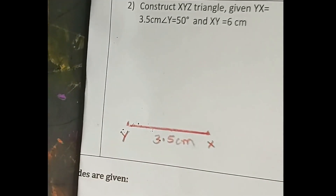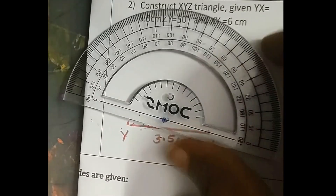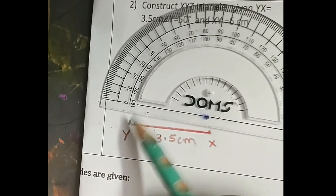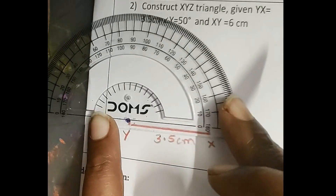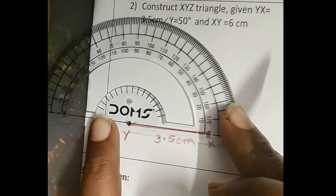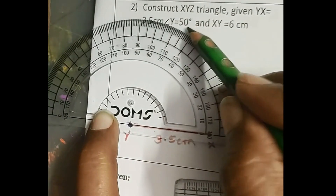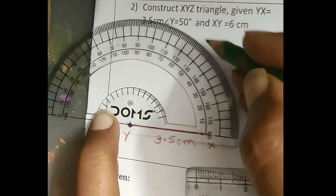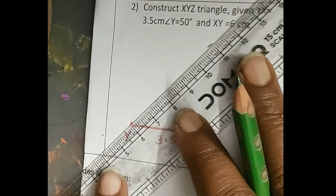Now we have to make an angle at Y of 50 degrees. Match this point with Y and align the 0 line to YX. We count: 10, 20, 30, 40, and 50. We take 50 degrees and join these two points.